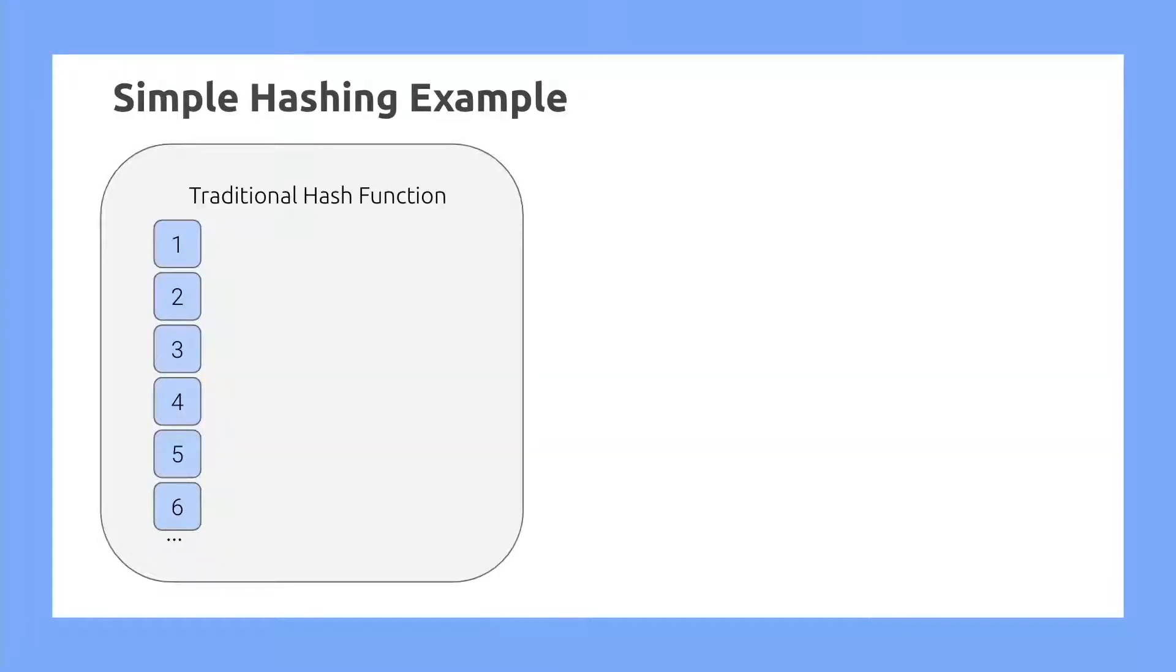So a simple hashing example. We have a traditional hash function with a series of different keys. We may output it to several different values, bounded in a finite sense. But these values can be fairly scattered and it's non-uniform. The one and the two, despite being close keys, can map to completely different values.